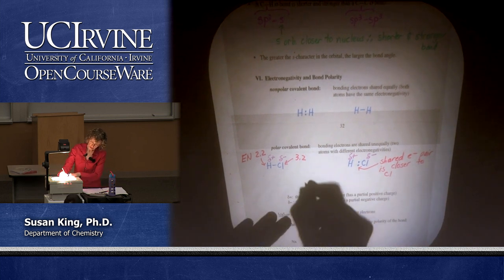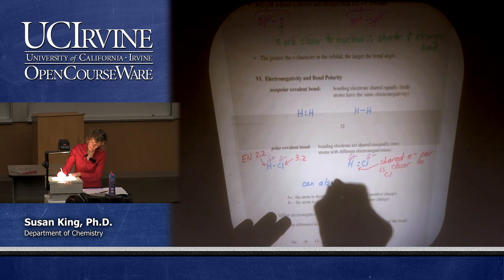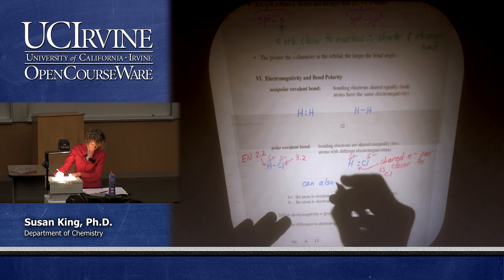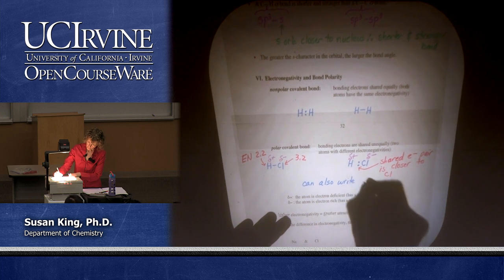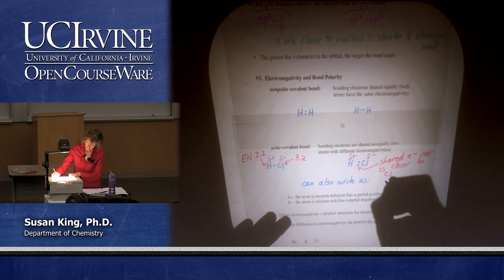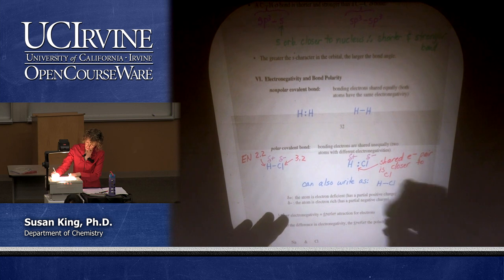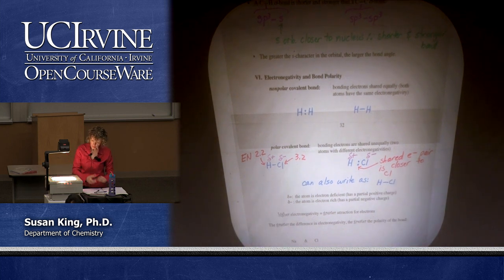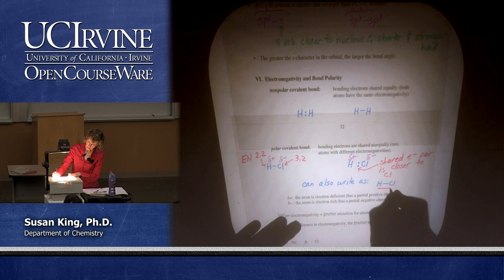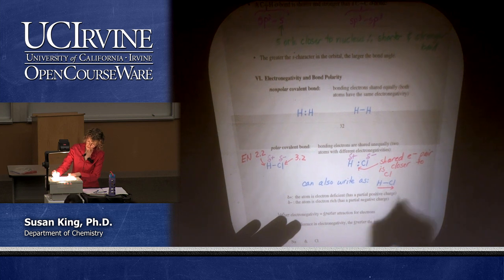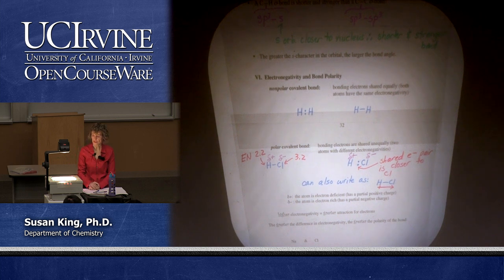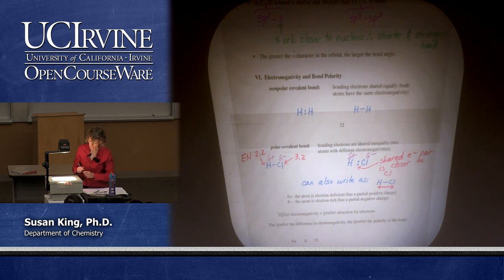Another way we can represent this is with a bond dipole using a vector. The head of the arrow is the negatively charged portion and the tail is the partial positive portion. The higher the electronegativity, the greater the attraction for electrons.